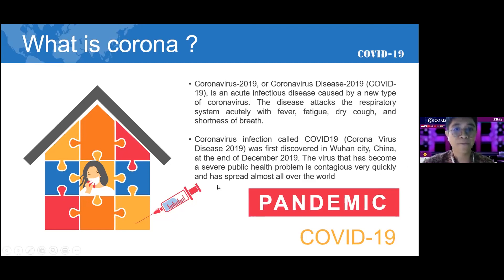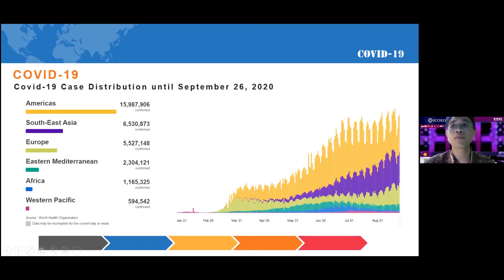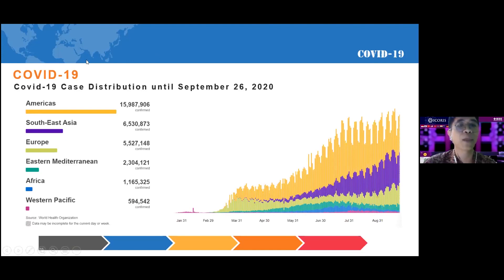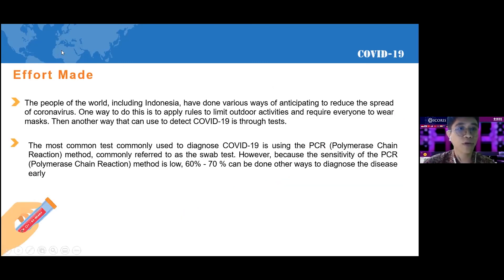Looking at the following graph from the World Health Organization website, the COVID-19 case distribution from January to August shows the graph always seemed to be increasing across America, South East Asia, Europe, Eastern Mediterranean, Africa, and Western Pacific. No wonder why the government, including Indonesia, is still very strict about everything regarding this virus.